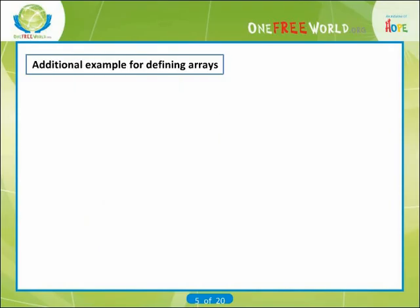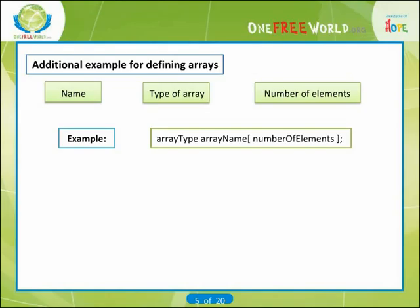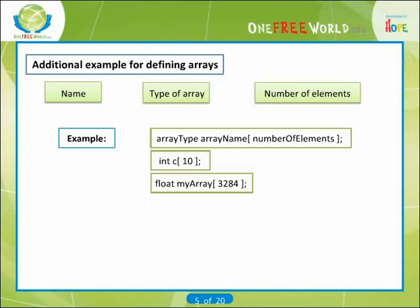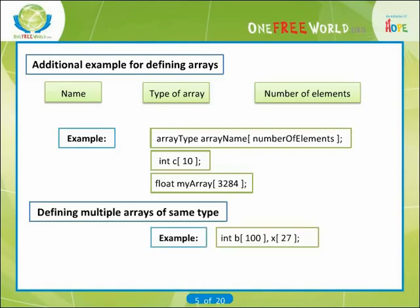Now let's see some additional examples for defining arrays. When defining arrays, specify the name, type of array, and number of elements. For example: array type, array name, number of elements — int C[10], float myarray[3284]. For defining multiple arrays of the same type, the format is similar to regular variables. Example: int B[100], x[27].